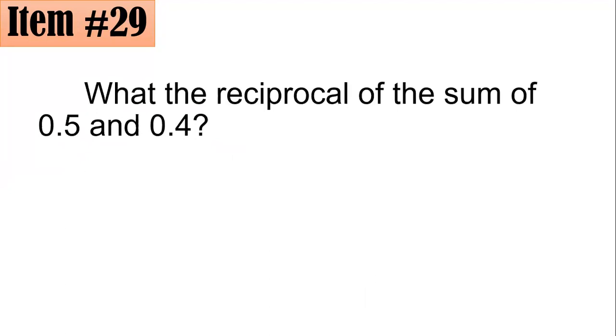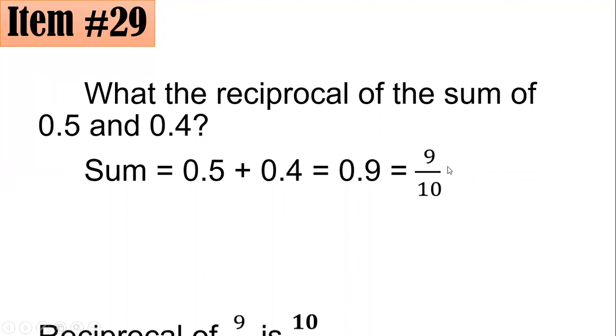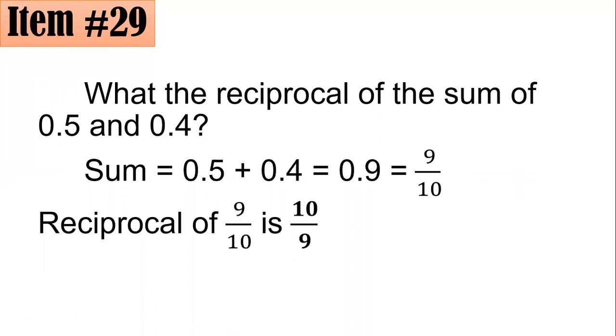Let's add the 0.5 and 0.4 first. And that gives you a sum of 0.9, which when written in fraction form is 9 over 10. And if it's 9 over 10 now, then the reciprocal of that could be achieved by interchanging the positions of your numerator and denominator. And thus, the reciprocal of 9 tenths is 10 over 9. Letter C.